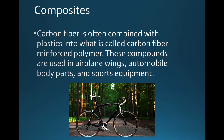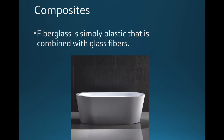Another example of a composite is carbon fiber — a reinforced polymer. We see bikes that are very light because of the carbon but also very strong. We also use carbon fiber in airplane wings, automobile body parts to make cars lighter, and sports equipment. Fiberglass is another example — sometimes a bathtub would be an example. It's a plastic combined with glass fibers. Canoes, kayaks, and boats often use fiberglass as a building material.